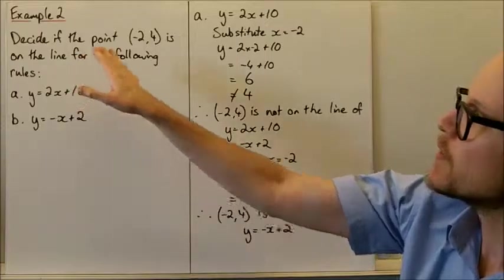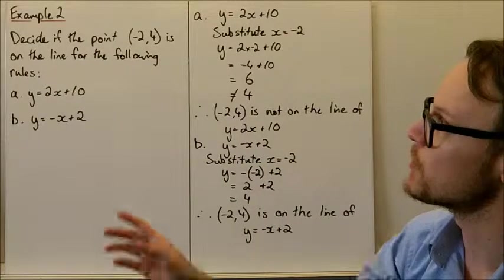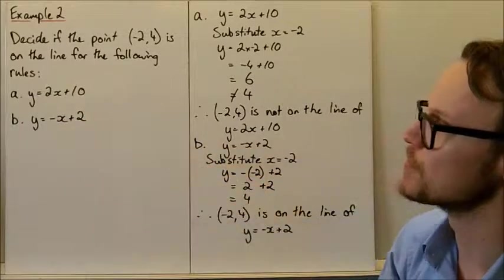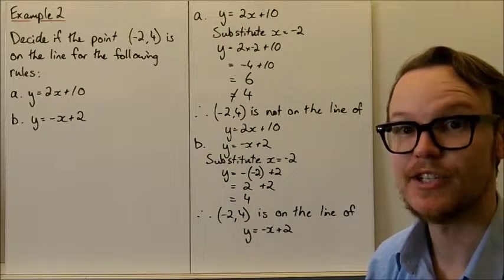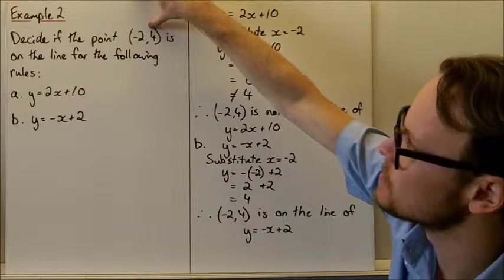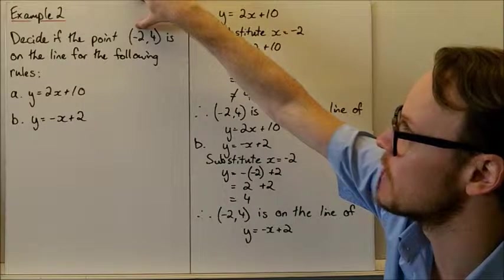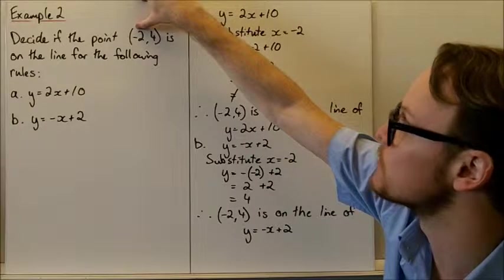Last example, we need to decide if this point is on the line for the following rules. The point is (-2, 4) for these two rules. The easy way is to use substitution and see if the y value equals 4 when we input negative 2.